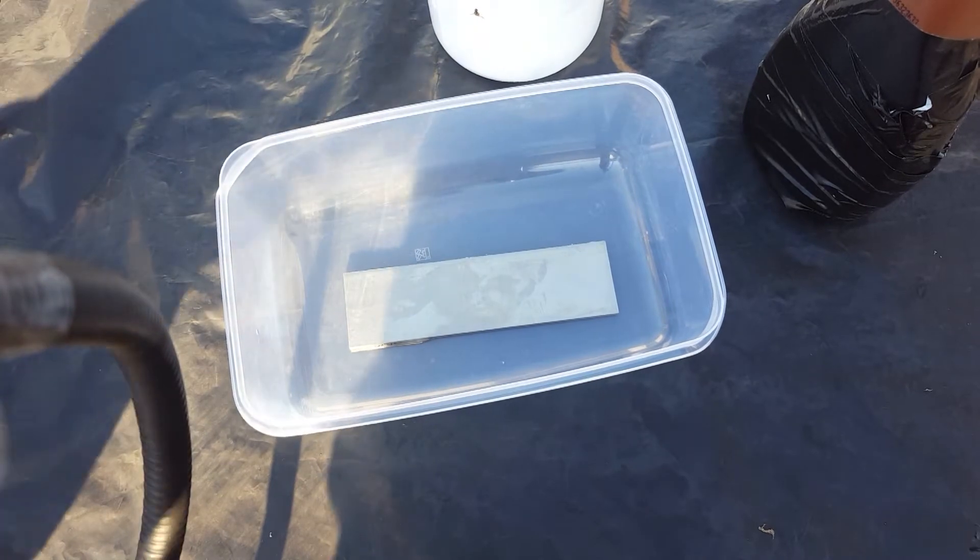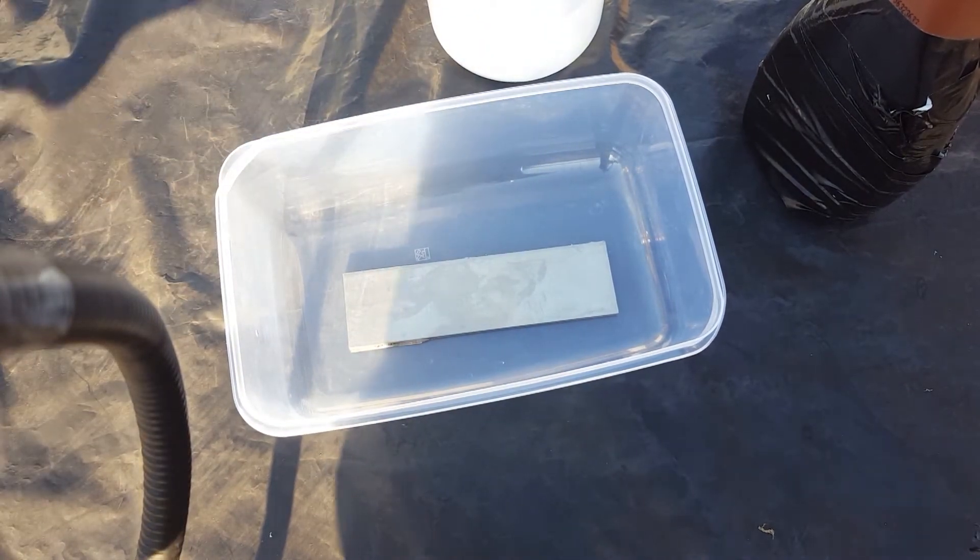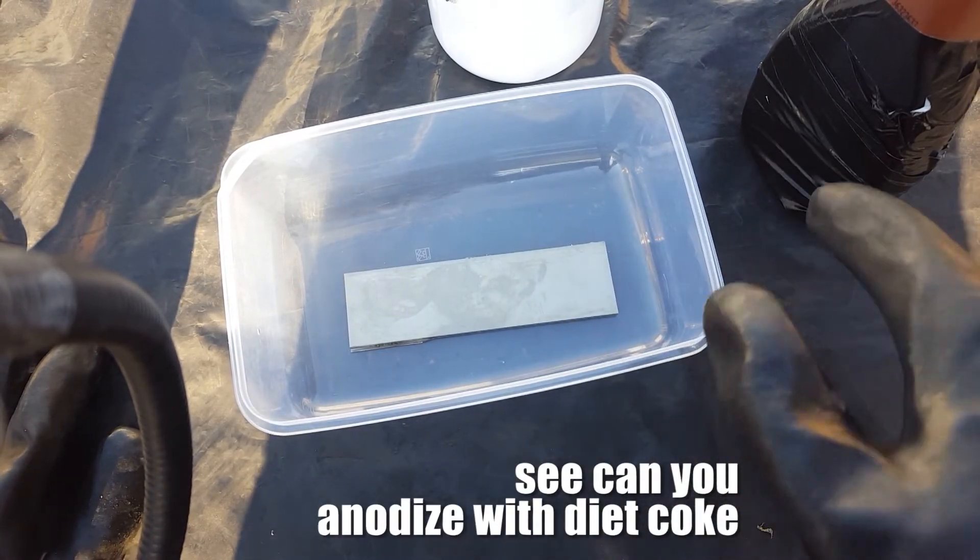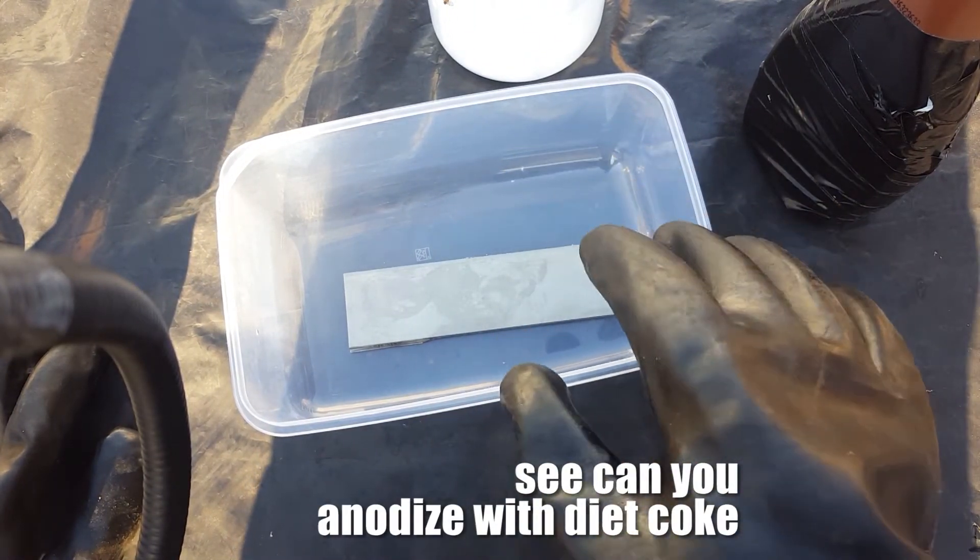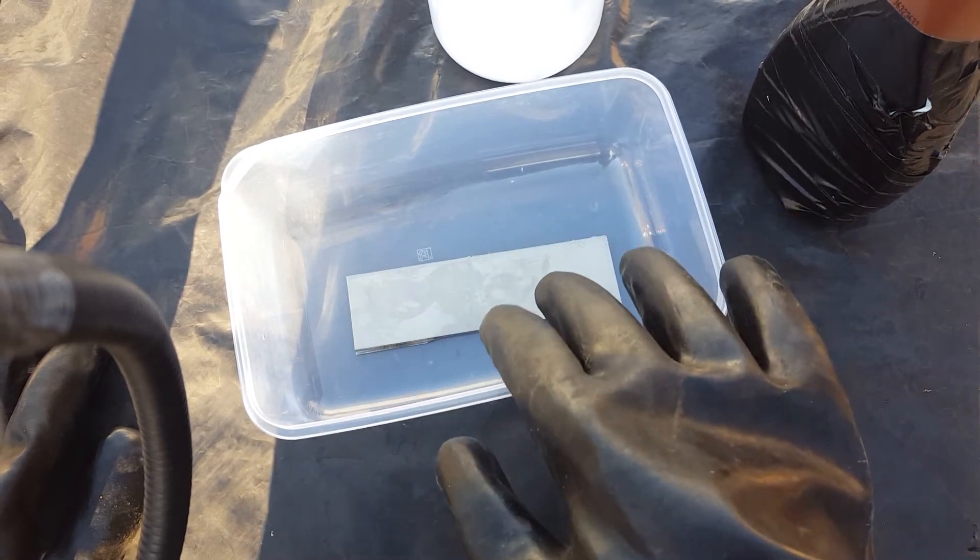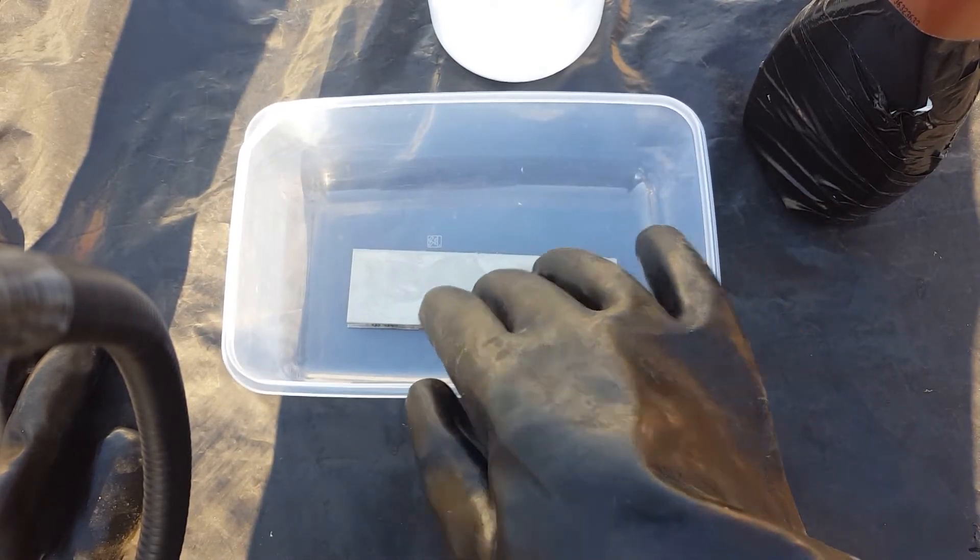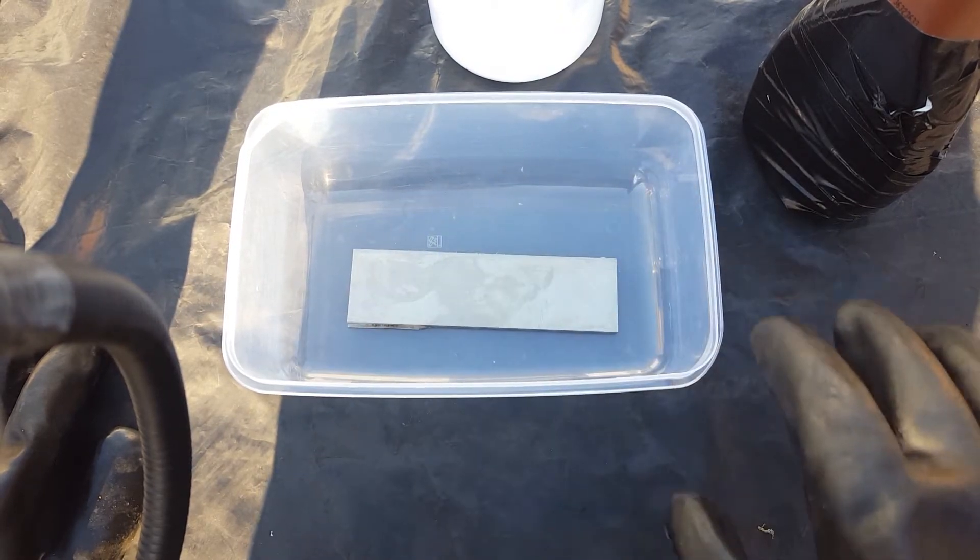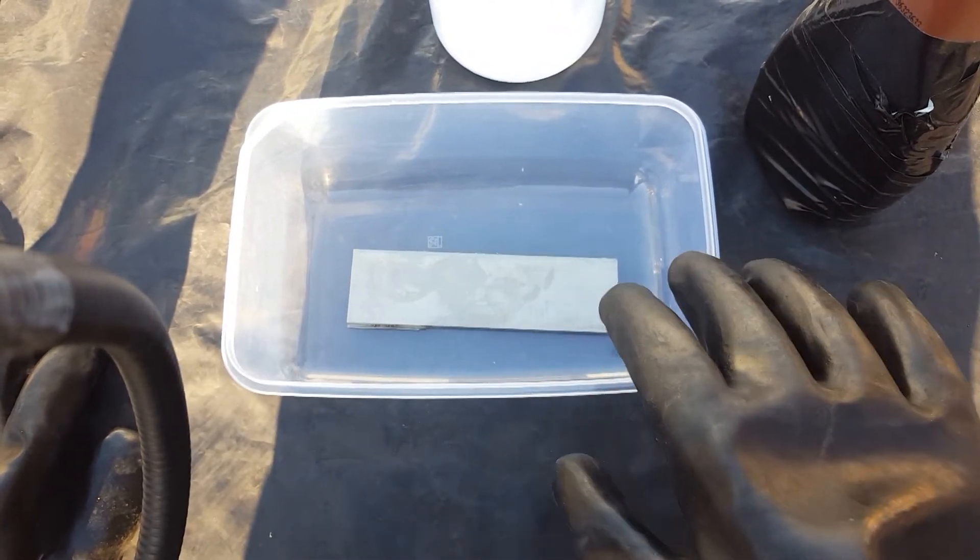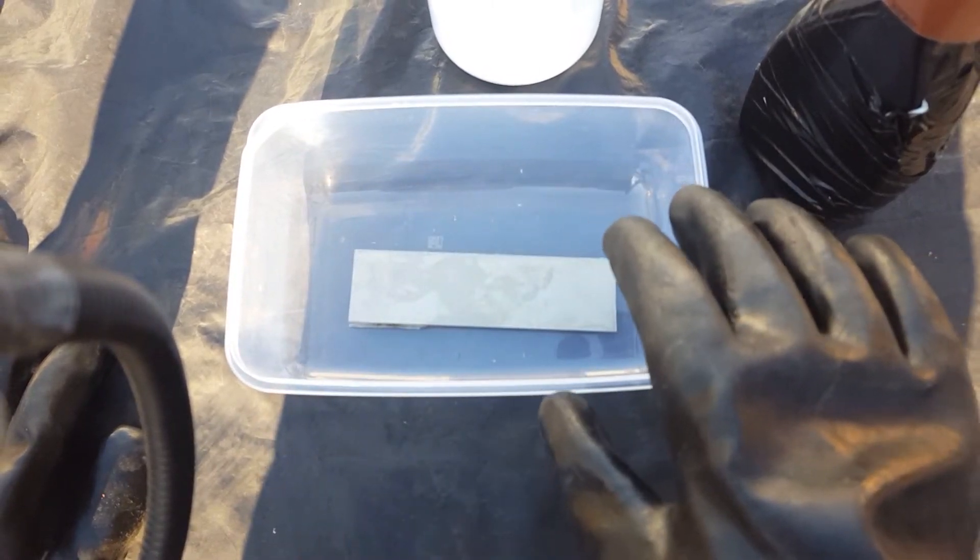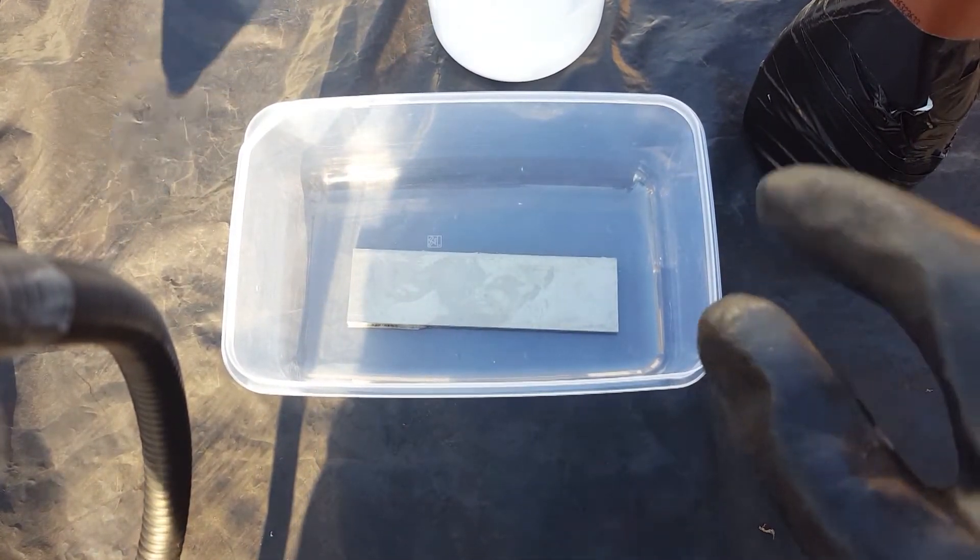You might have seen examples of anodization where it's dulled or washed out, like in my Diet Coke video. A lot of that happens because we didn't properly prep and clean the surface. The micro-etching from the hydrofluoric acid will get through that oxide layer to the bare metal, reducing it down to an even layer and letting us anodize as cleanly as possible.